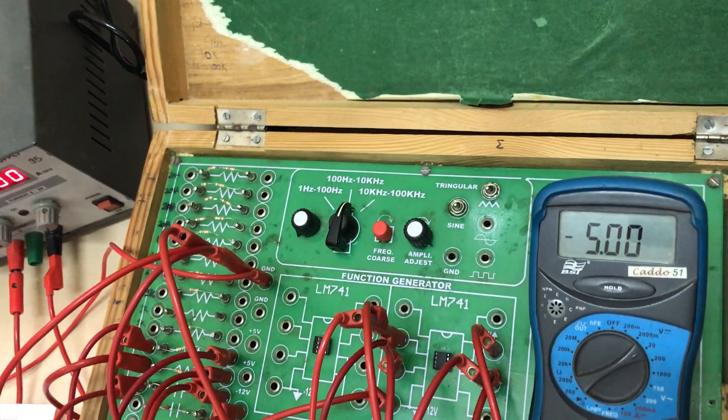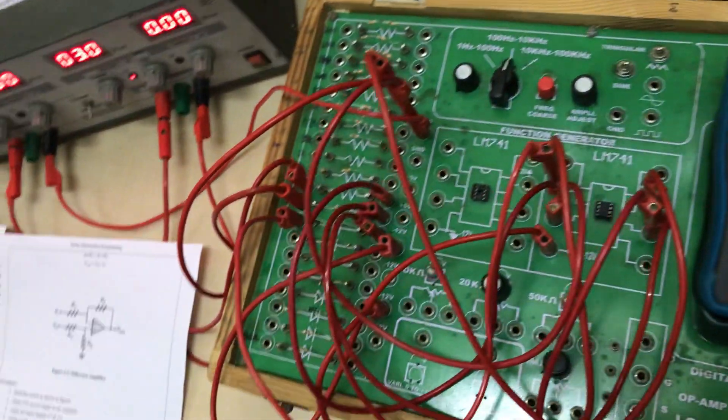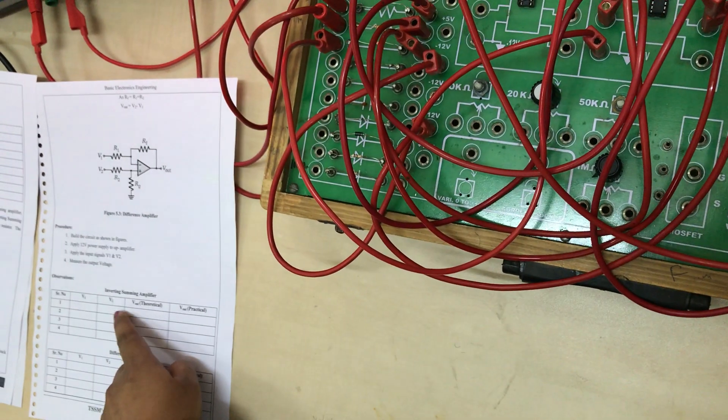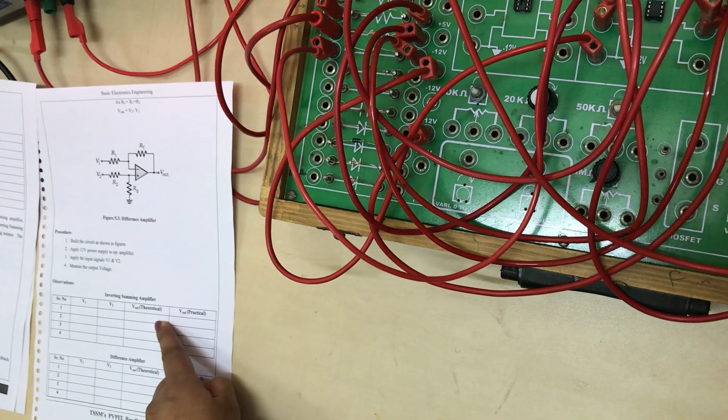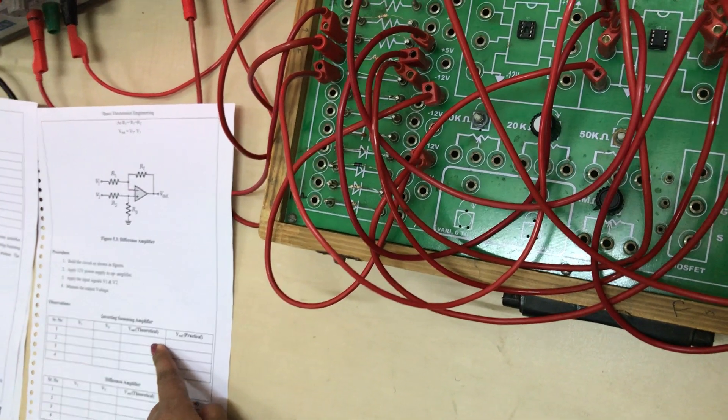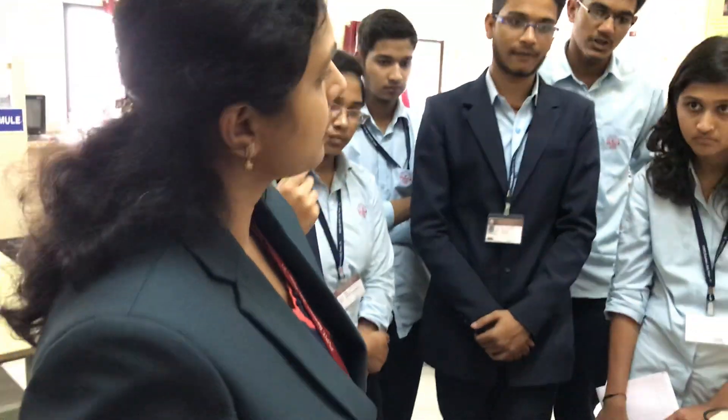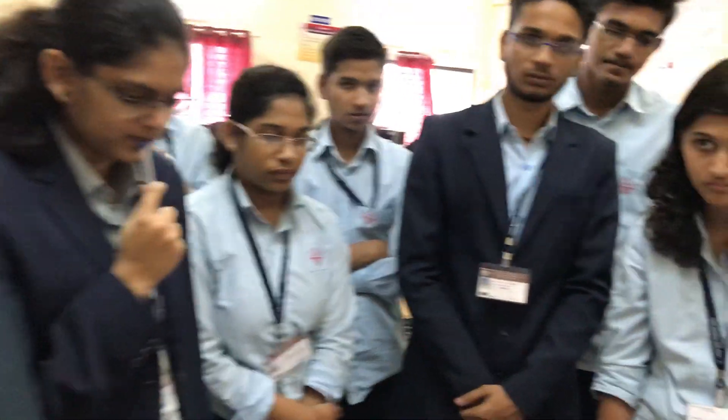We have to write down the readings. This is the table: V1 reading 2 volts, V2 3 volts, and output voltage theoretically minus V1 plus V2, that is minus 5, and practically also we are getting minus 5. We prove this, so we'll take another reading.